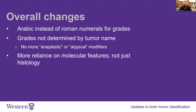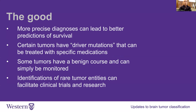Some other updates: Arabic numbering is now used instead of Roman numerals for tumor grades, so that typos won't be as big a problem in a pathology report. Grades are no longer determined by the tumor name — we got rid of words like 'anaplastic' and 'atypical' and just use the grade number. More precise diagnoses can lead to better predictions of survival. Certain tumors have driver mutations that can be treated with specific medicines. Some tumors have a benign course that can simply be monitored, and we can now identify rare tumor entities, group them together, and research them to understand how better to treat them.